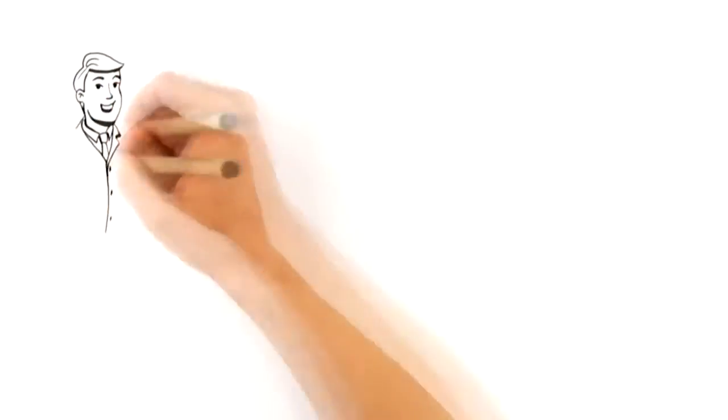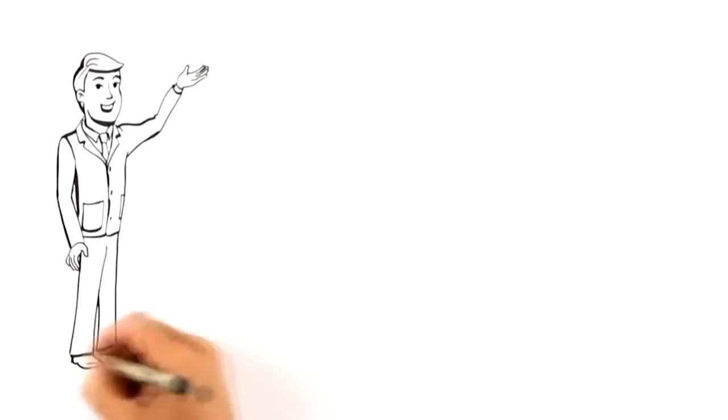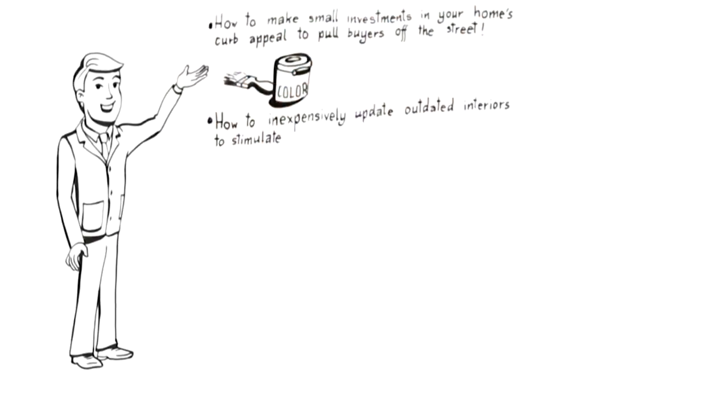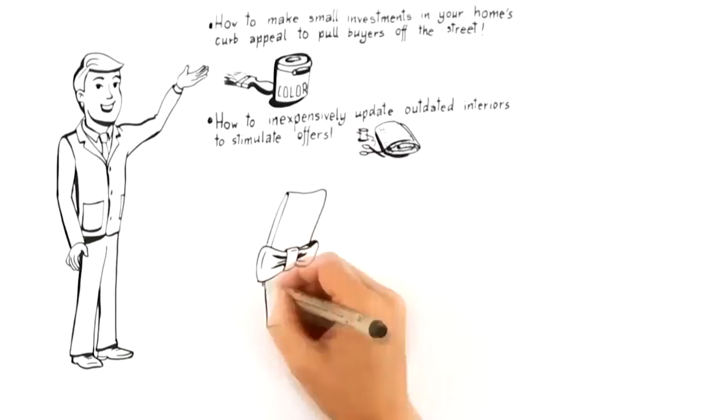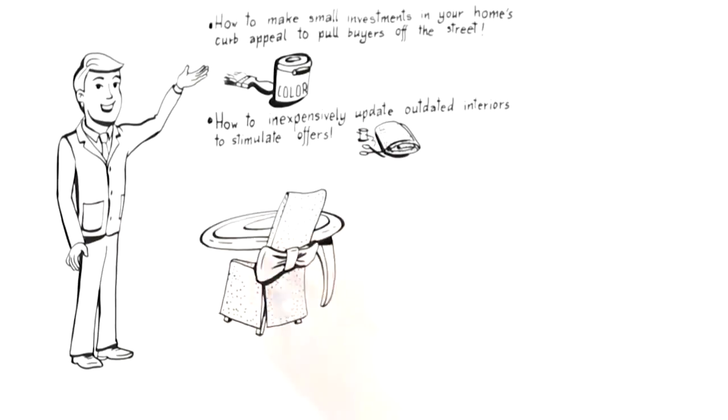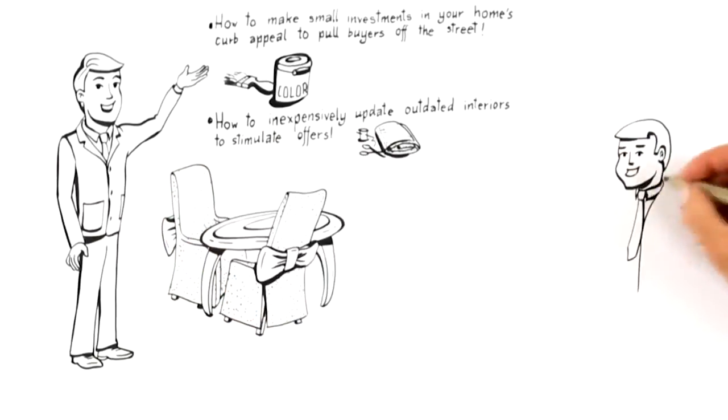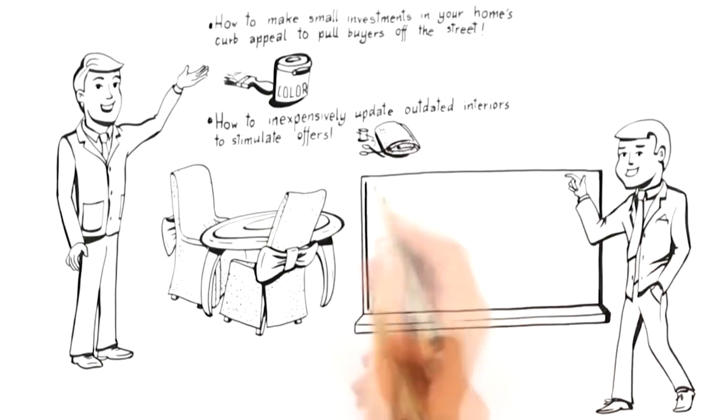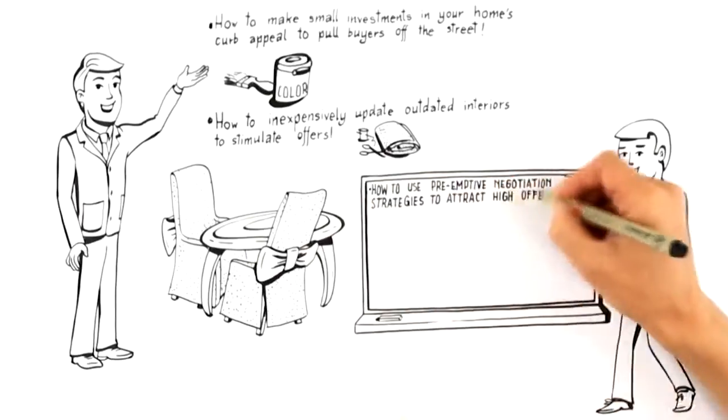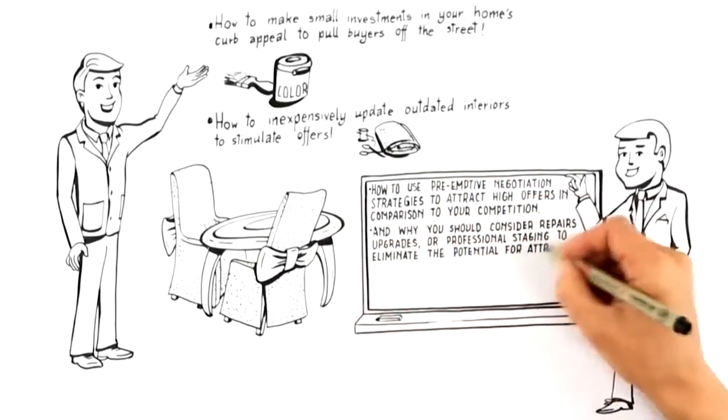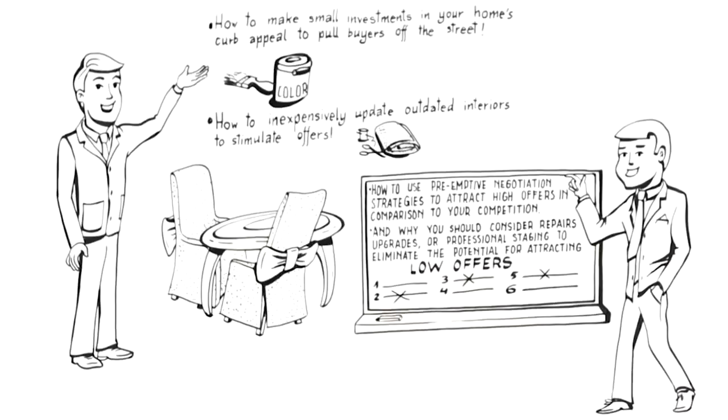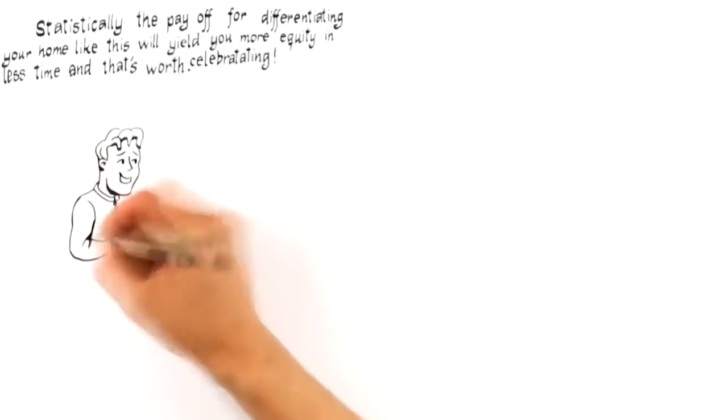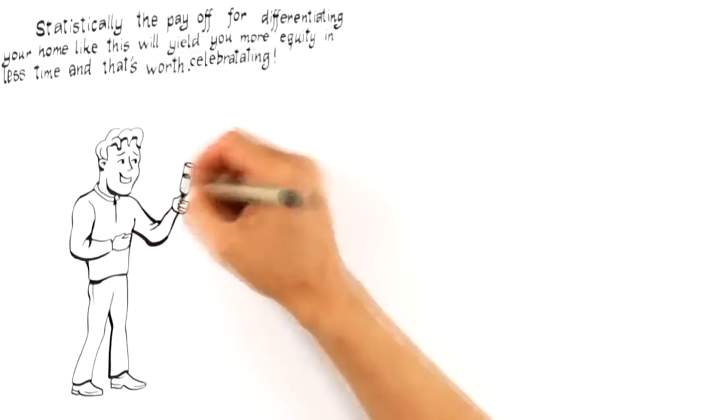This means the advice you should receive to attract buyers like this must include how to make small investments in your home's curb appeal to pull buyers off the street, how to inexpensively update outdated interiors to stimulate offers, how to use pre-emptive negotiation strategies to attract high offers in comparison to your competition, and why you should consider repairs, upgrades, or professional staging to eliminate the potential for attracting low offers. Statistically, the payoff for differentiating your home like this will yield you more equity in less time, and that's worth celebrating.